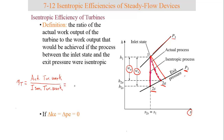Going back to the equation: turbine efficiency equals actual work W_A over isentropic work W_S. In specific work terms, that is (H1 minus H2_actual) divided by (H1 minus H2_isentropic). H2_isentropic is the enthalpy out of the turbine when the process is isentropic; H2_actual is the actual enthalpy out. That is the isentropic efficiency of a turbine.